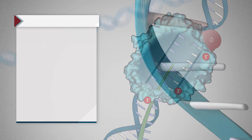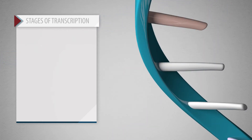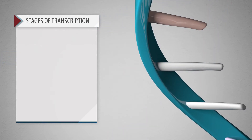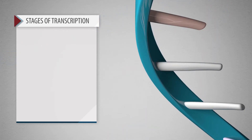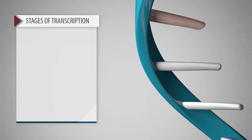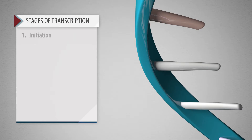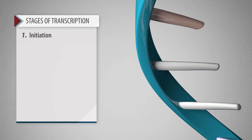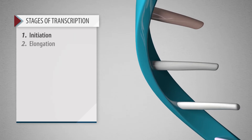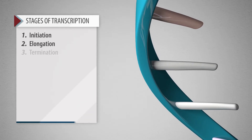The process of transcription occurs in three main stages: initiation, elongation, and termination.